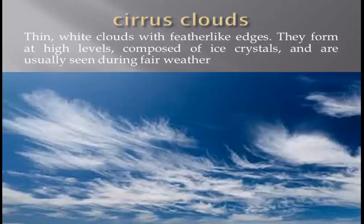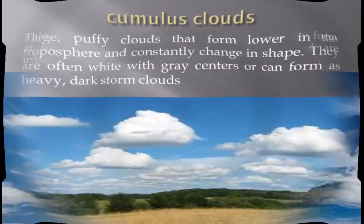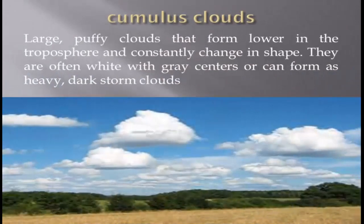Cirrus clouds form at high levels, composed of ice crystals, and are usually seen during fair weather. Cumulus clouds: large puffy clouds that form lower in the troposphere and constantly change in shape. They are often white with gray centers or can form as heavy dark storm clouds.